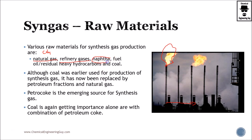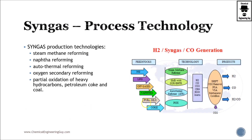You can use naphtha for syngas even though it's not recommended. Fuel oil and residual heavy hydrocarbons are also options. Petroleum coke is gaining importance once again in order to produce syngas, because crude oil prices are increasing and very volatile. So coal is now getting attention again. Let's talk about the process technology.